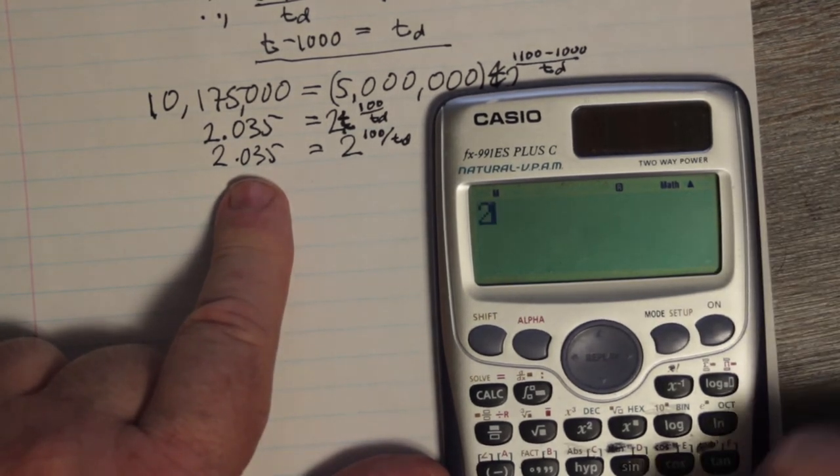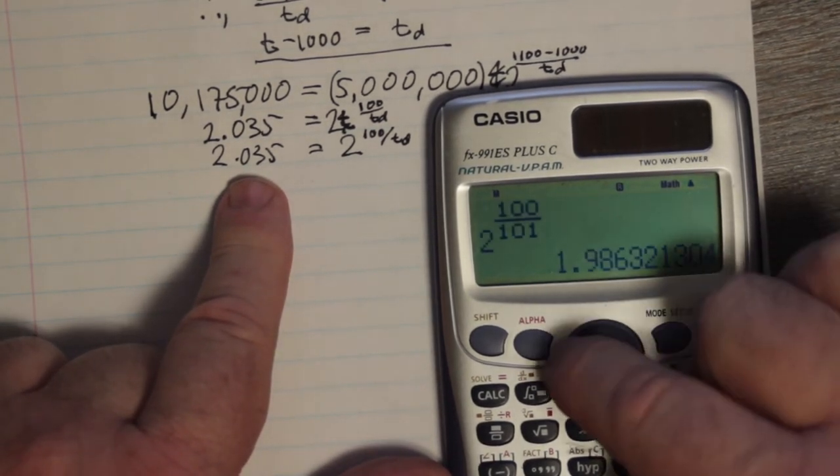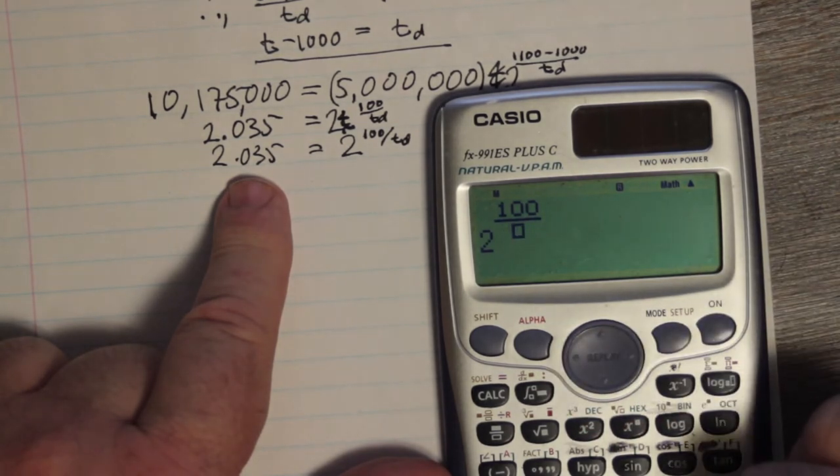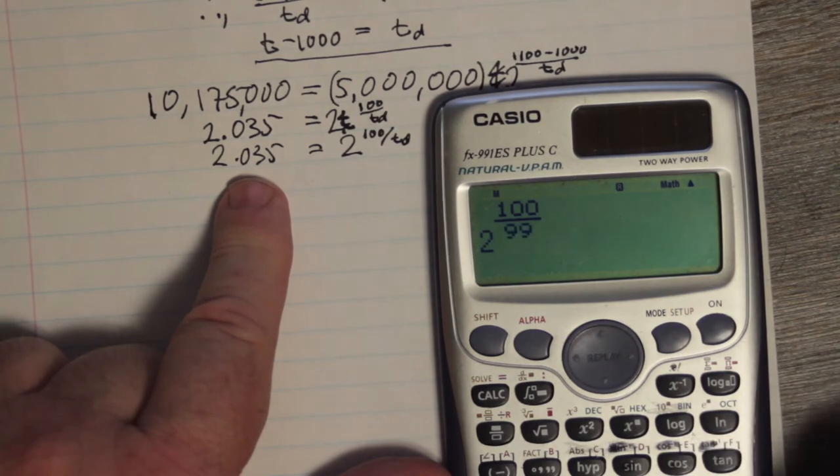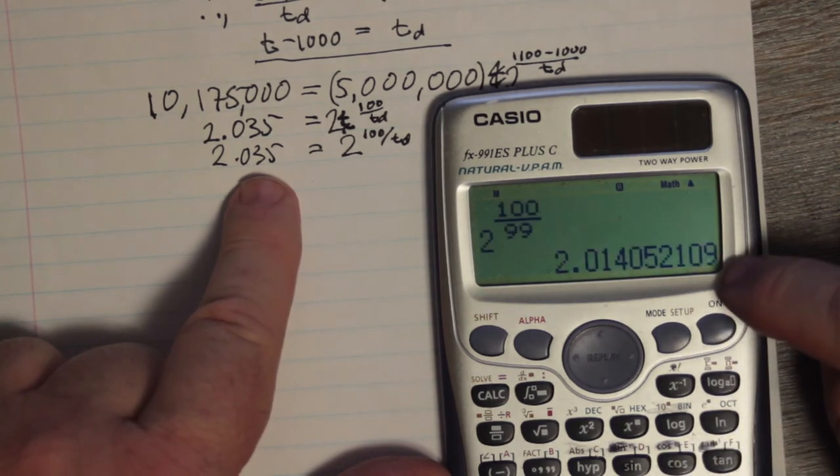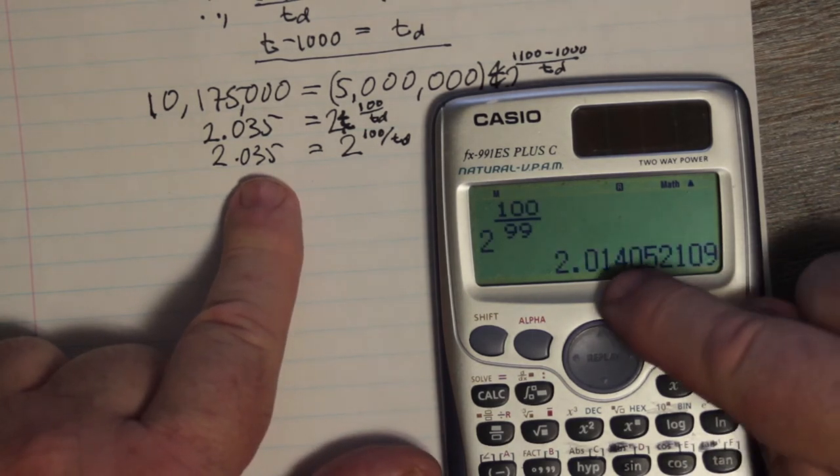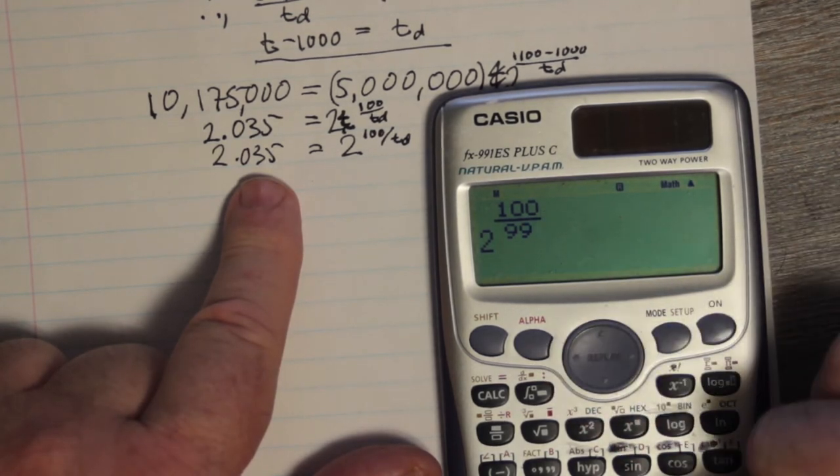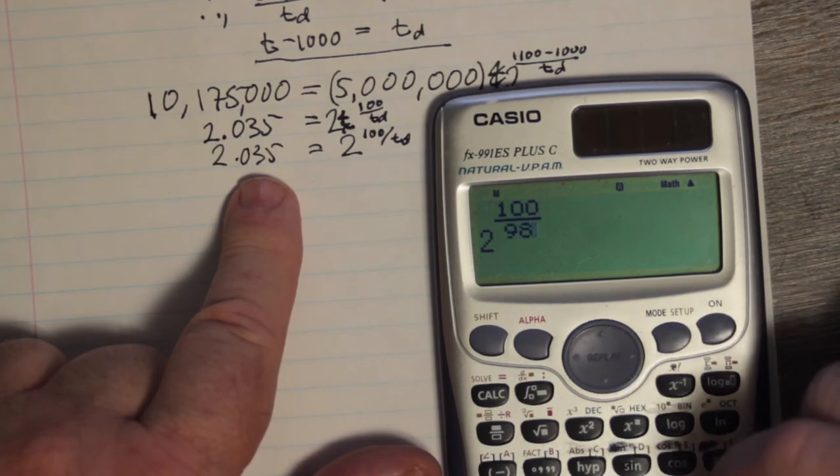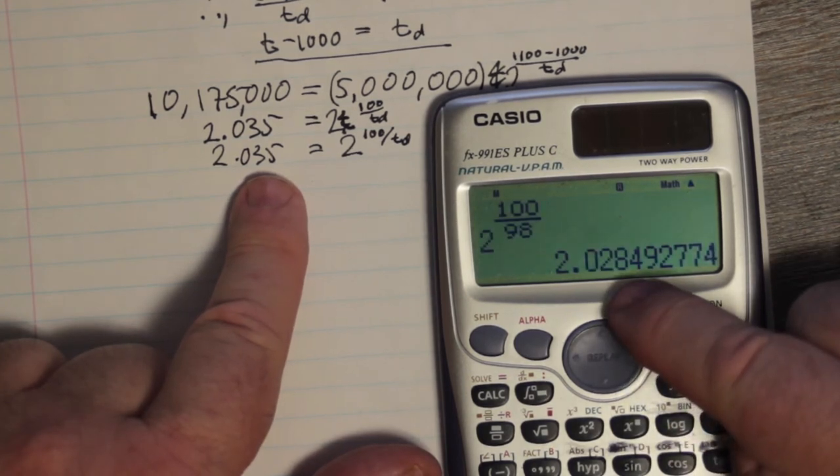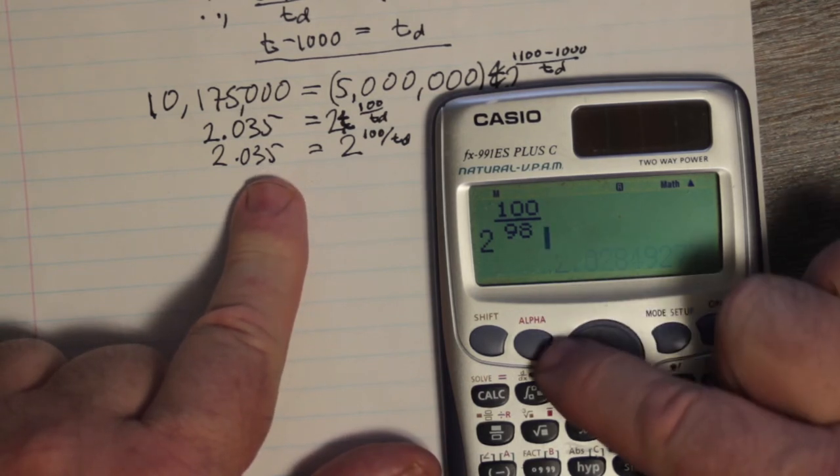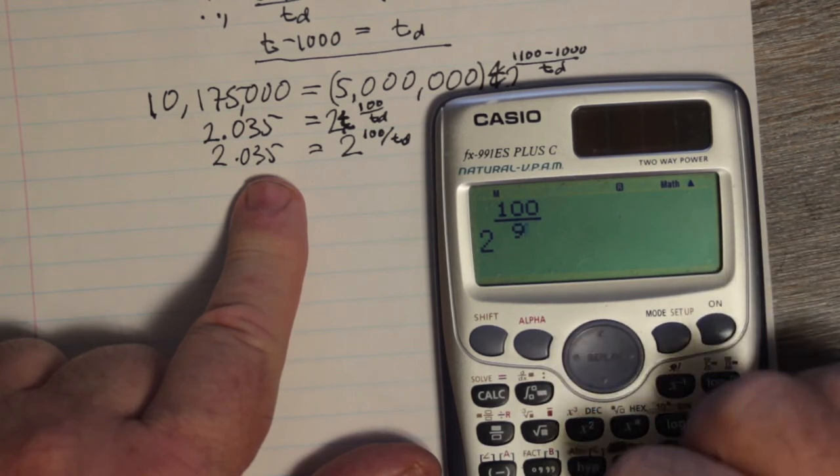So I've got to go below 100. So 2 to the, let's say 99. Let's see what happens there. 2.014. Well, we're getting warm. That's not too bad. Let's see if we can do better. 2 to the 98. Let's try that. 2.028. We're still a little low. Let's try this again. 2 to the 97.